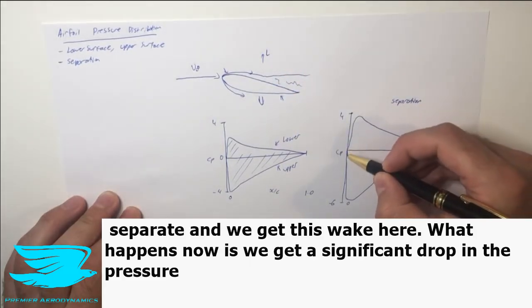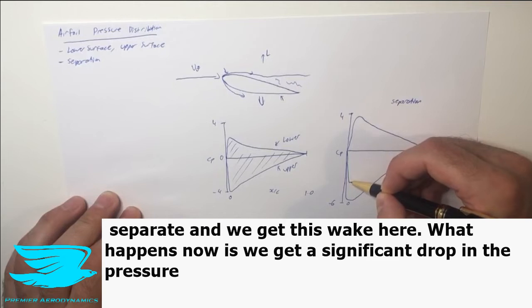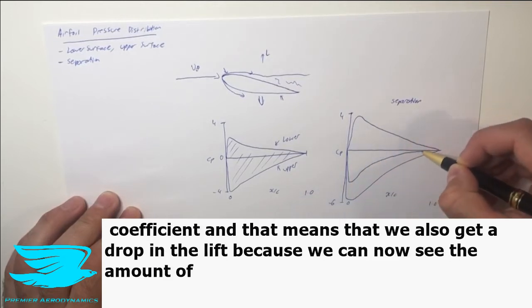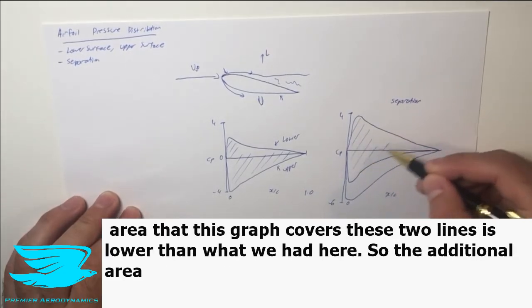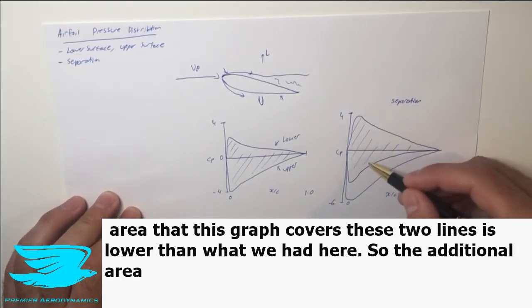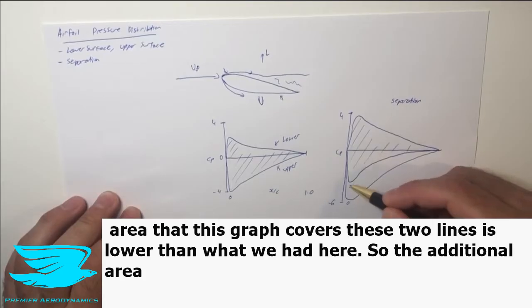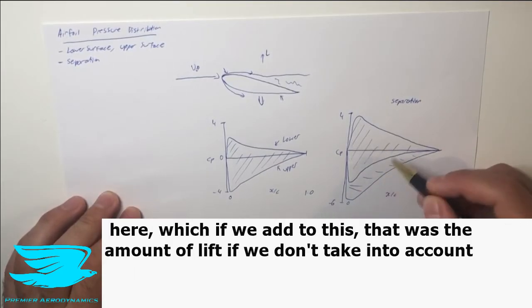What happens now is we get a significant drop in the pressure coefficient, and that means that we also get a drop in the lift. Because we can now see the amount of area that this graph covers, these two lines, is lower than what we had here. So we have an additional area here.